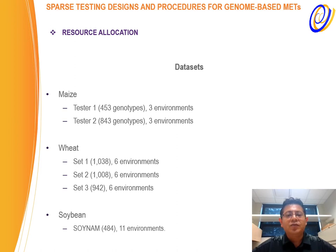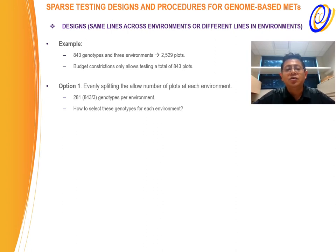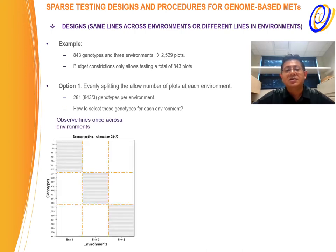I will show results for three different crop species: two data sets for maize, three data sets for wheat, and one soybean data set. I will explain how we design these training and testing sets. Suppose we have a data set with 843 genotypes and we are interested in the performance of these genotypes in three environments, requiring a total of 2,529 plots. But if budget constraints allow testing only 843 plots, the question is how to distribute the plots across environments. The first option is to evenly split the number of plots, giving something like 281 genotypes per environment. The next question is how to select these genotypes, and we might have different ways to do it.